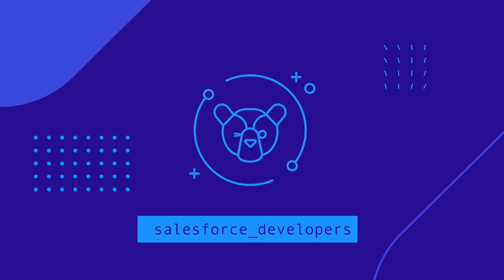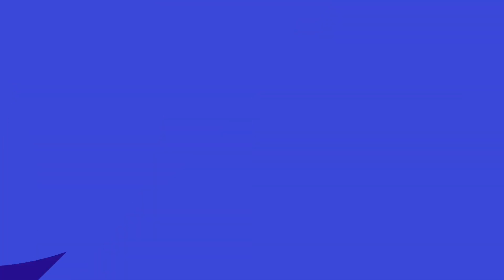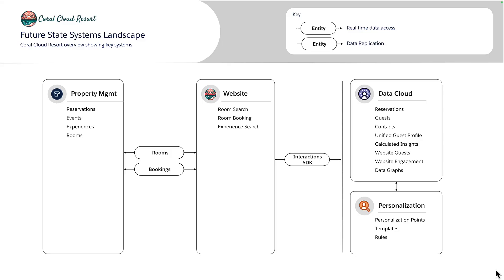Let's recap on the systems landscape from a previous video before we get started. At Coral Cloud Resorts we were tasked with serving dynamic content on the website based on engagement — what users are interacting with. We've already set up Data Cloud to bring in the website data and created a data graph to help surface key insights as data changes in near real time.